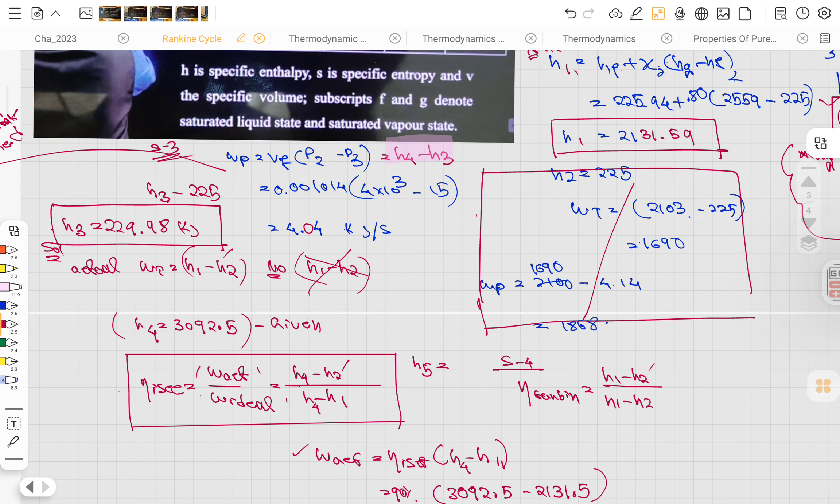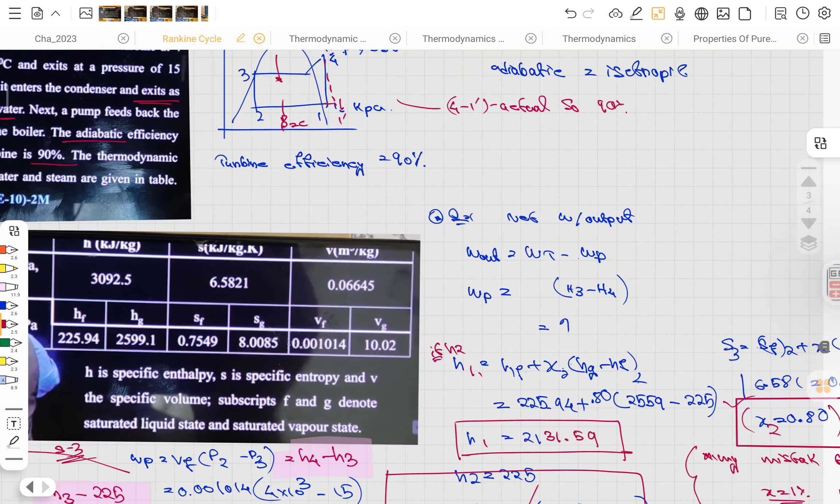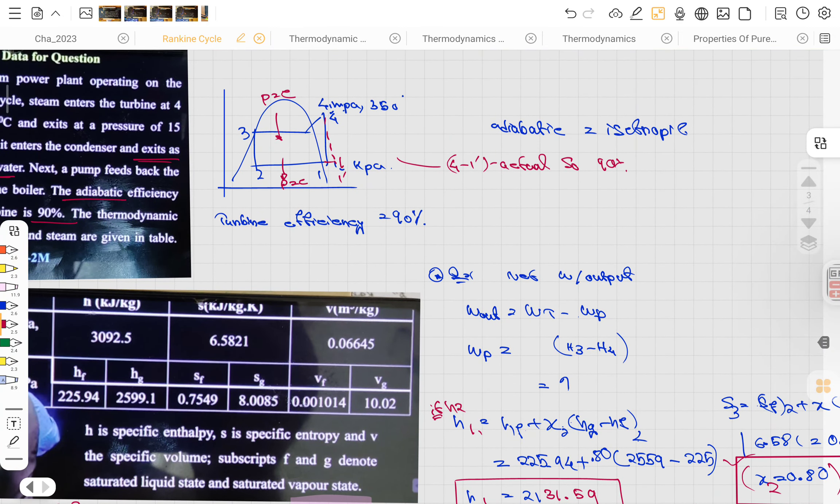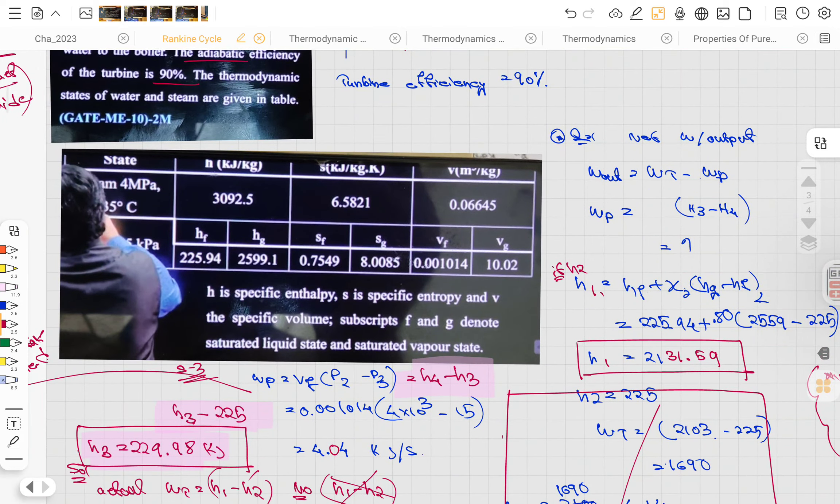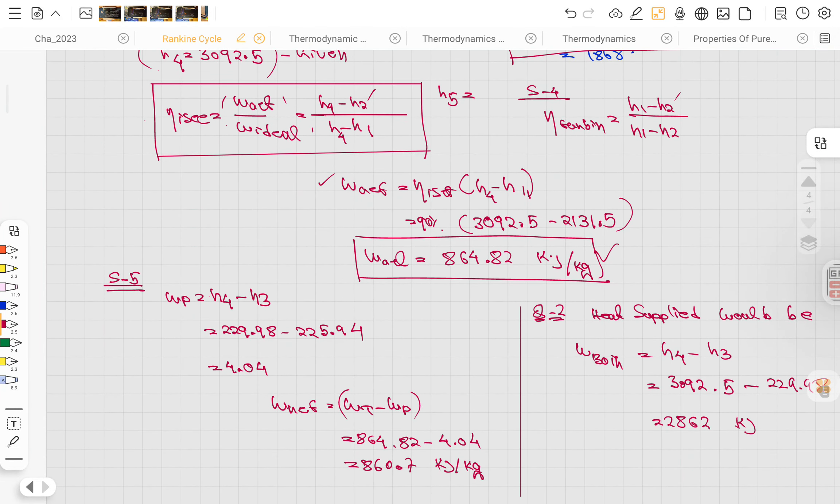From there we're getting the h3 value. The other thing you're thinking is that h3 value is given, but we really don't know where it is - subcooled or what. You need to figure out h3. Then from pump work we can get it, and by subtracting we get the work of the process - the work output.